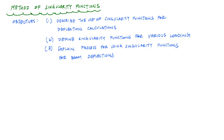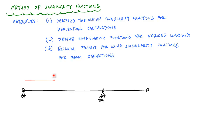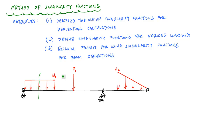So let's take this beam into consideration. I've got this beam here with a pin and a roller, and it's got a uniformly distributed load, a concentrated load, and a linear distributed load that starts over here. If I wanted to get the deflection equations using a traditional technique like the double integration method, I would need five moment functions to solve this problem. That means I would have to cut here, here, here, here, and here in between any discontinuity.